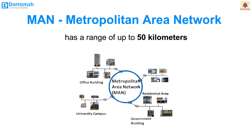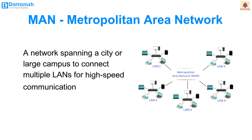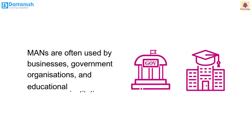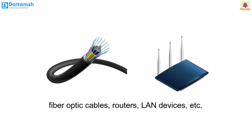A Metropolitan Area Network (MAN) has a range of up to 50 km. It spans a city or large campus to connect multiple LANs for high-speed communication across larger areas. MANs are often used by businesses, government organizations and educational institutions. MANs are set up using fiber optic cables, routers and LAN devices.